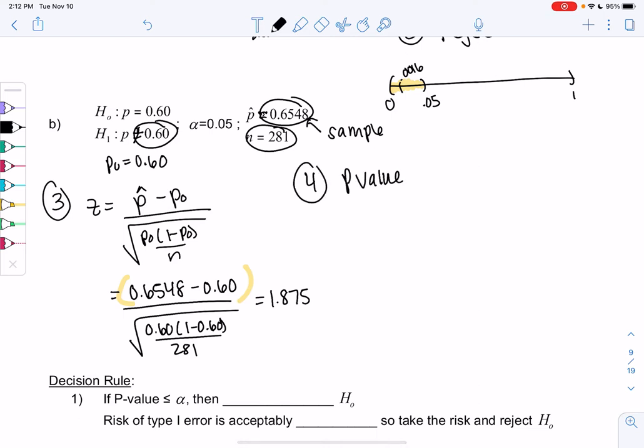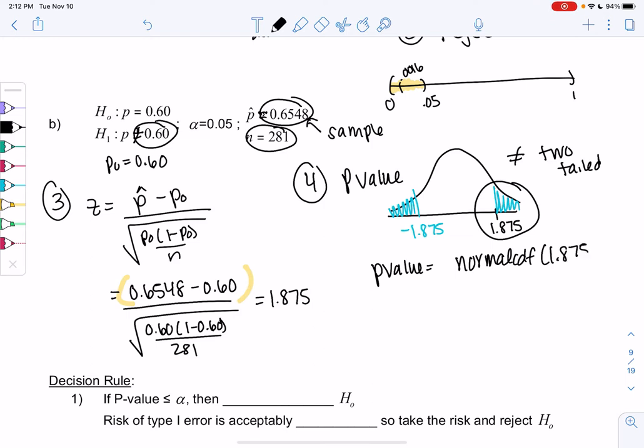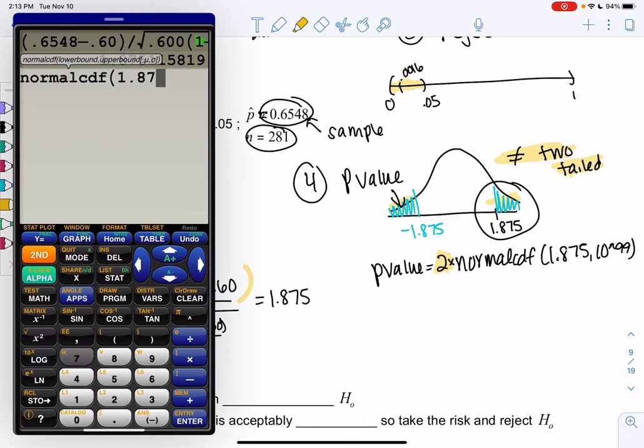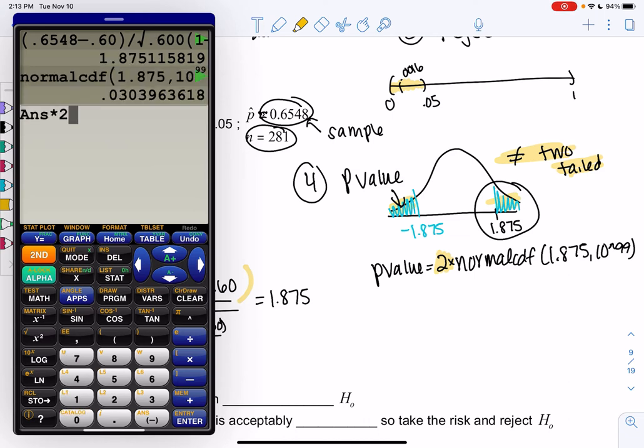And it gets a little bit different for these two-taileds. So we have 1.875. But since we have not equal, we have two-tailed. Which means we're actually going to look at the area bigger than 1.875. But we're also going to look at the other tail, the negative 1.875. That's what two-tailed looks like. So basically what we do is we're going to find the p value. The area will be normal CDF of 1.875 up to 10 to the 99. And then rather than finding both tails, I can just times it by 2 to double it to find the second one. So you only have to double it for two-tailed because there's two tails.